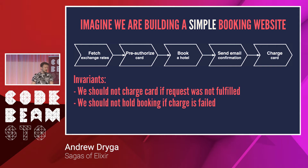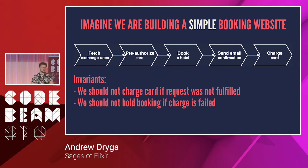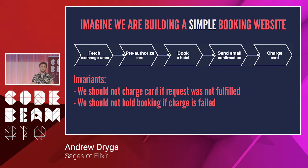Imagine we're building a simple booking website. To book a trip, you need to fetch currency rates, then pre-authorize the card to make sure the customer has enough money. Then we book a hotel, send email confirmation, and charge the card to take the actual money. We want to hold two invariants: we should not charge the card if we didn't fulfill the request, and we should not hold any bookings if we failed to charge the card — otherwise it's bad business because we still pay for the bookings.